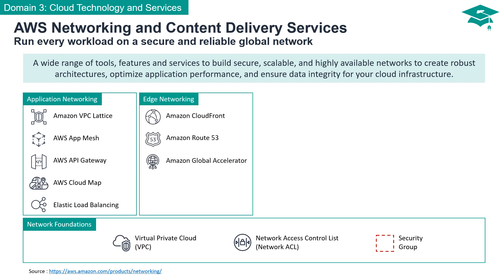The edge of your network is where global reach meets optimal performance. We'll discuss services like Amazon CloudFront, Amazon Route 53, and Amazon Global Accelerator, which ensure efficient content delivery, intelligent routing, and enhanced user experiences.